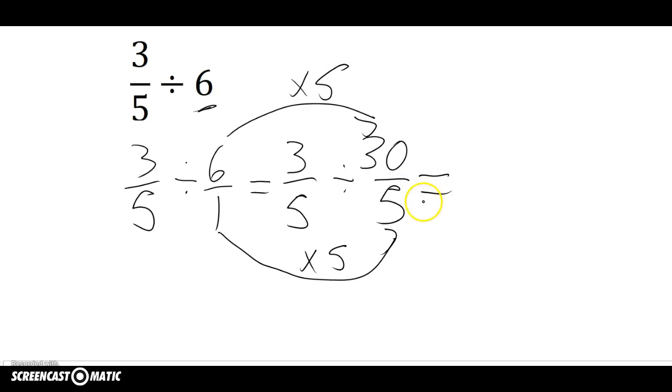I'm going to multiply six times five to get my thirty. So my question now becomes: how many groups of thirty-fifths are in three-fifths? And there's definitely not a full group, but there's a part of a group there. Now, I need thirty-fifths to be a full group, but I only have three-fifths.